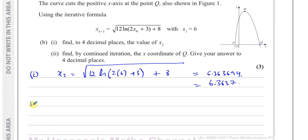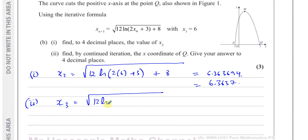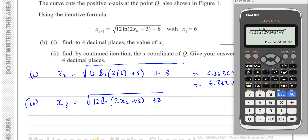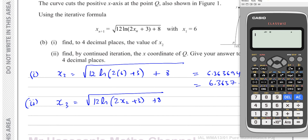Part 2 says: find by continued iteration the x-coordinate of Q. When it says continued iteration, we have to substitute these values back into the formula again. To find x_3, I'm going to put 12 times ln(2 times x_2 + 3) plus 8 into the formula. The way to do this on your calculator is quite a clever method.